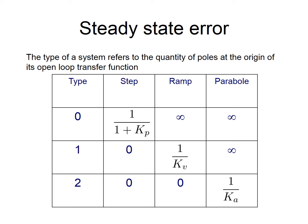For a Type 2 system, if we input a step, steady-state error is zero. If we input a ramp, steady-state error is again zero. And finally, if we have a parabolic input, the steady-state error equals 1 over ka.